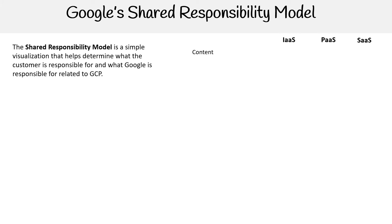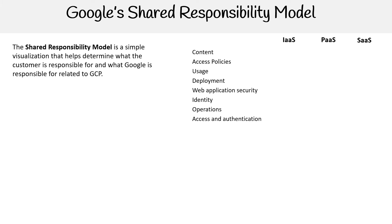Generally, these things are broken down into different categories. We have infrastructure as a service, platform as a service, software as a service — the types of cloud computing. And then along the side we have a bunch of categories or responsibilities. These are Google-specific ones: content access policies, usage, deployment, web app security, identity, operations, access and authentication, network security.